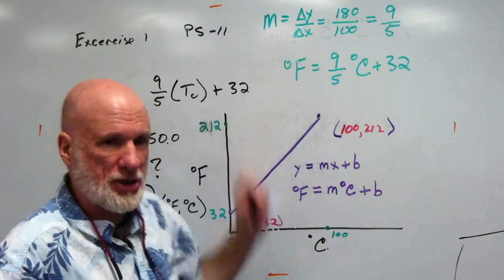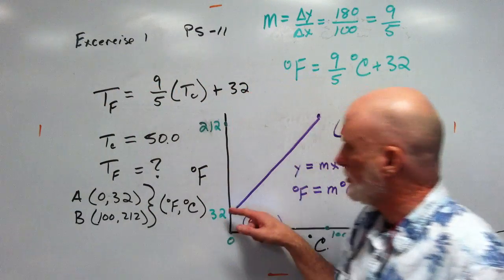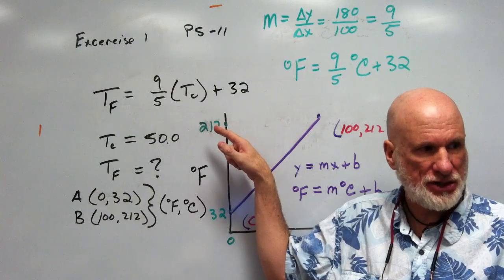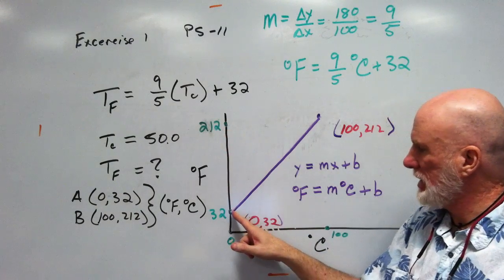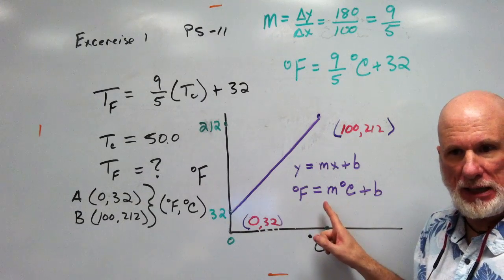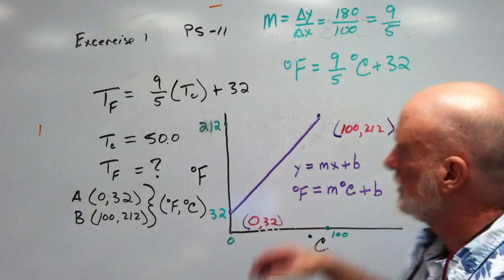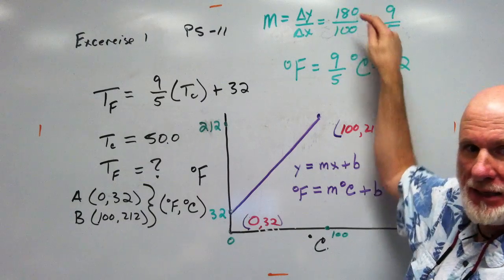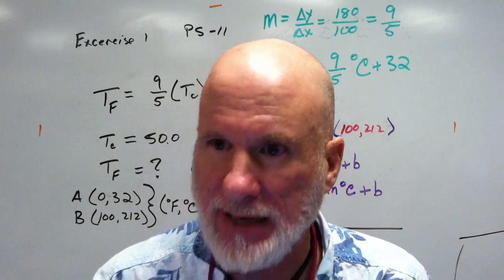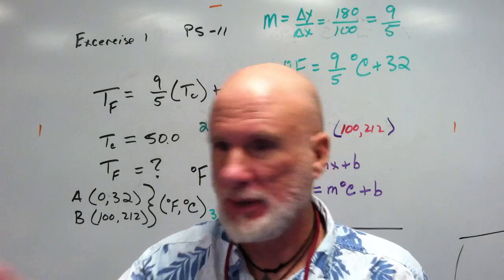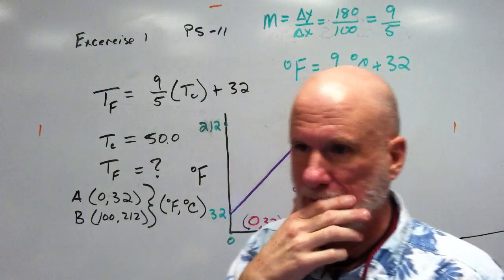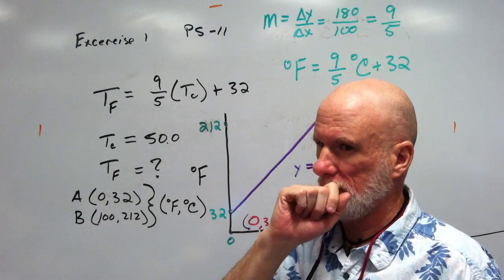But what is the slope? The slope is going to be the change in Y, which goes from 32 to 212, which is 180. The change in X is going to be 0 to 100. So 180 divided by 100 is 1.8 or nine-fifths. Same thing? Clear? Yes.